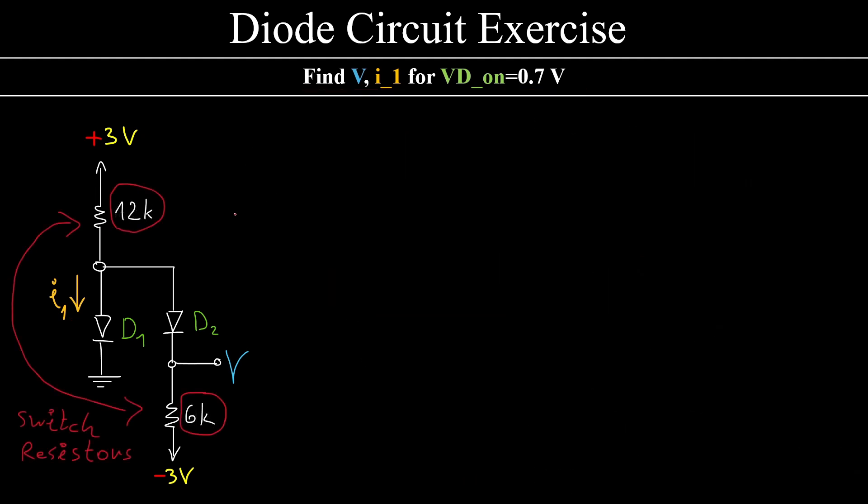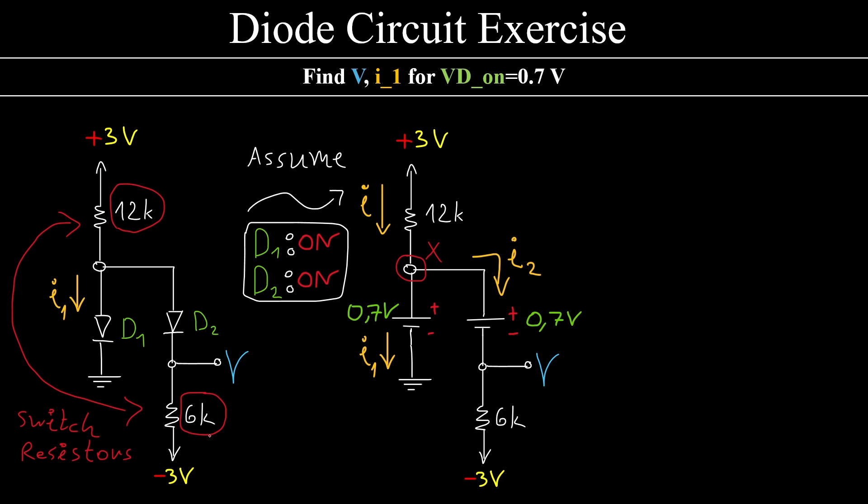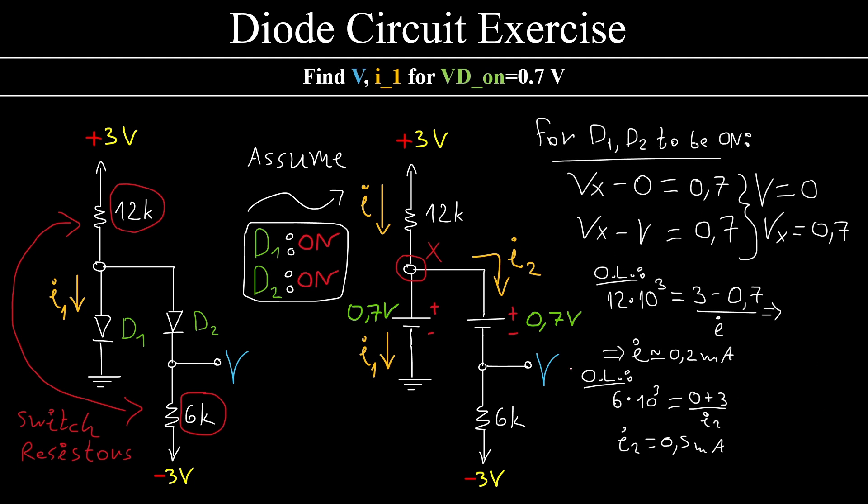Now let's check this case where we switch these two resistors, and this one is 12k, and this one is 6k. In that case, if I go ahead and assume again that both of the diodes are on, and I do pretty much the same analysis, I'm going to have different currents for I and I2.